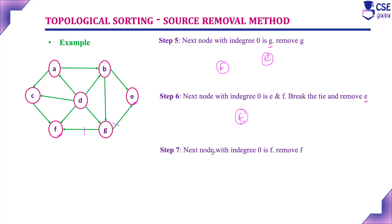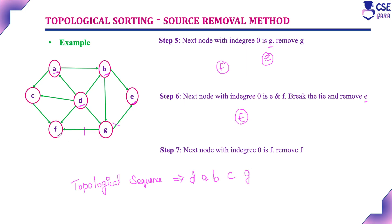We have visited all the vertices in the given graph. The order in which we visited and removed each vertex from the graph is called the topological sequence, also known as topological sorting. As per the source removal method, the topological sequence is: first we removed D, then A, then B, then C, then G, then F, then E. So the topological sorting for this graph is D, A, B, C, G, F, E.